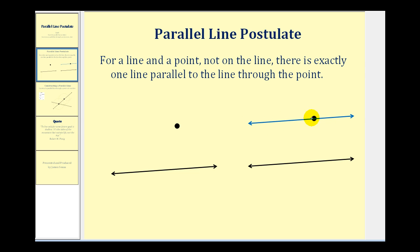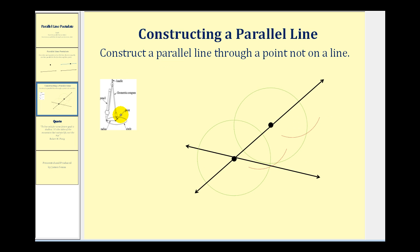Any other line passing through this point would eventually intersect this black line. Let's go through the procedure for constructing this parallel line through a point not on the line. What we'll need is a protractor and a straight edge. If we're given this line and this point,